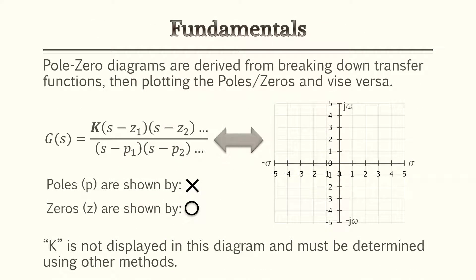Pole-zero diagrams are derived by breaking down the transfer functions, then plotting the poles and zeros on your s-plane. In the image shown, you can plot every individual zero and pole on the plot using x's and circles — poles are indicated by x's and zeros by circles.